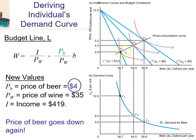If you connect those dots and draw a line, this is a price consumption curve. It shows your optimal bundles as you change the price of one good, in this case beer, while you keep your budget and the price of wine, the Y good, unchanged. This price consumption curve, in this example, has a positive slope.